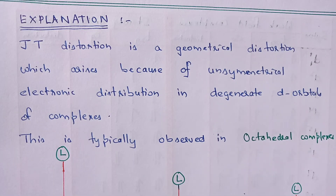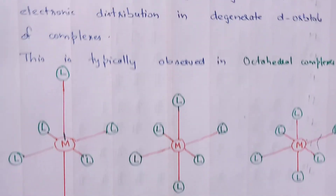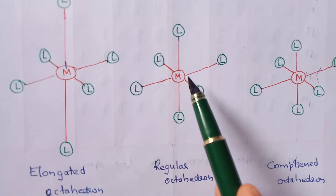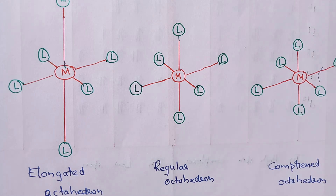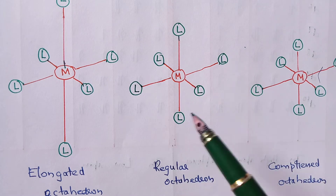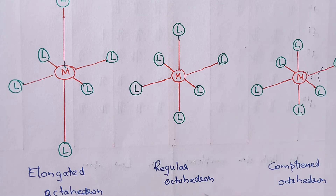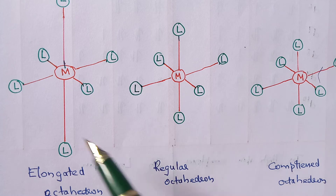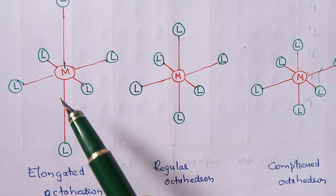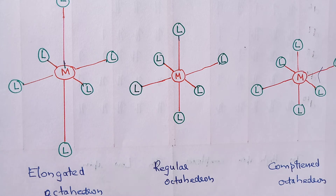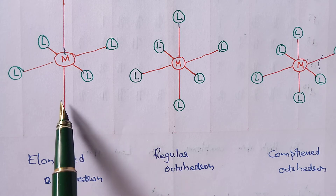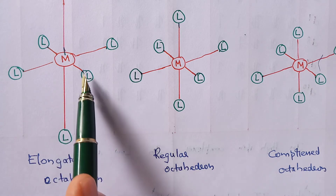Jahn-Teller distortion is more frequently observed in octahedral complexes. In an octahedron, the metal will be present at the center and ligands are present at the corners. All metal-ligand bond lengths are equal and we call it a regular octahedron. But because of Jahn-Teller distortion, sometimes the ligands along the z-axis — the vertical line — will move away from the metal, giving us an elongated octahedron where axial bonds are longer than equatorial bonds.